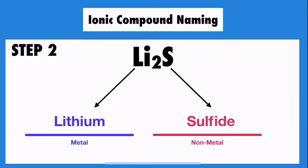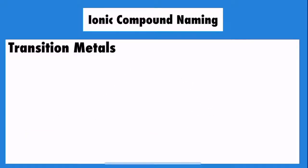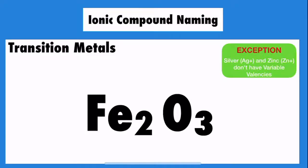However, with transition metals, it's a little different, because as you probably know, transition metals have variable valencies, meaning they can lose different numbers of electrons to become stable. If this doesn't sound familiar, I highly recommend my video on trends in the periodic table. Anyways, because transition metals have variable valencies, their ion needs to be specified in the name using Roman numerals.